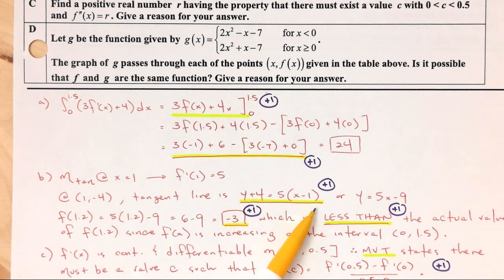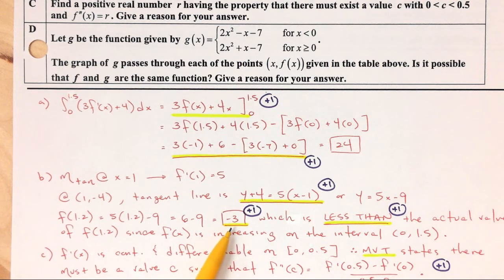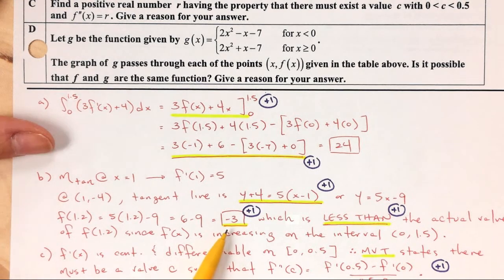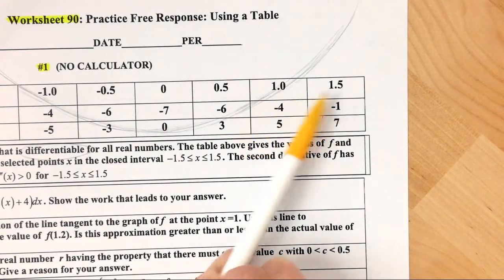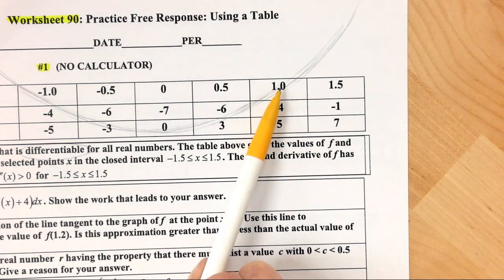So my approximate value is negative 3. There's a third part to question B: is this approximation greater than or less than the actual value of f(1.2)? The actual value of 1.2 is between x = 1 and x = 1.5, so it's somewhere along that interval. If we use the slope of the tangent line at x = 1 for this approximation, we need to think about how the slope is changing.